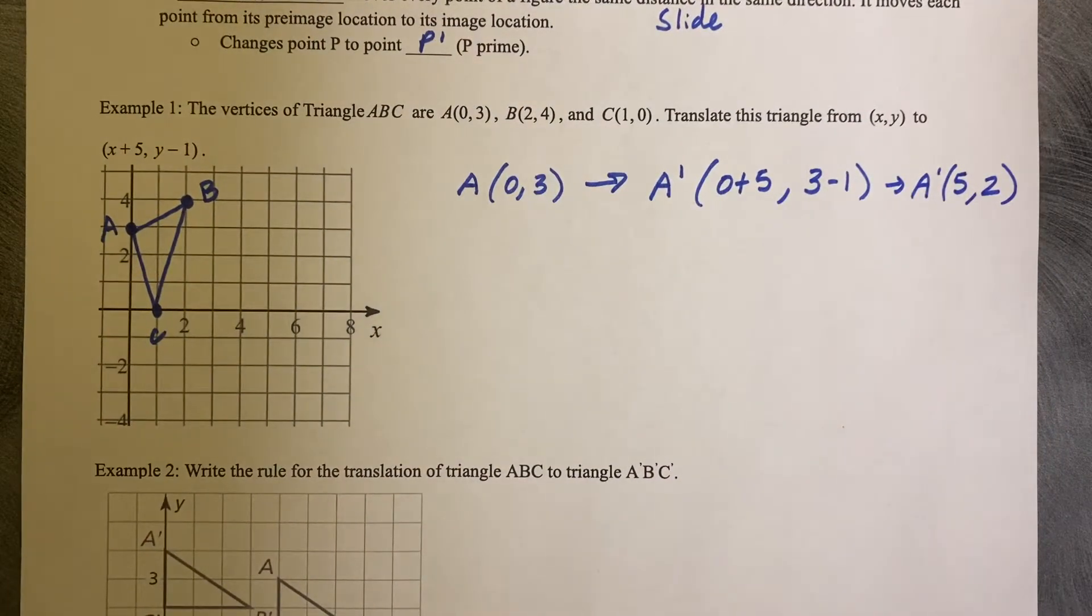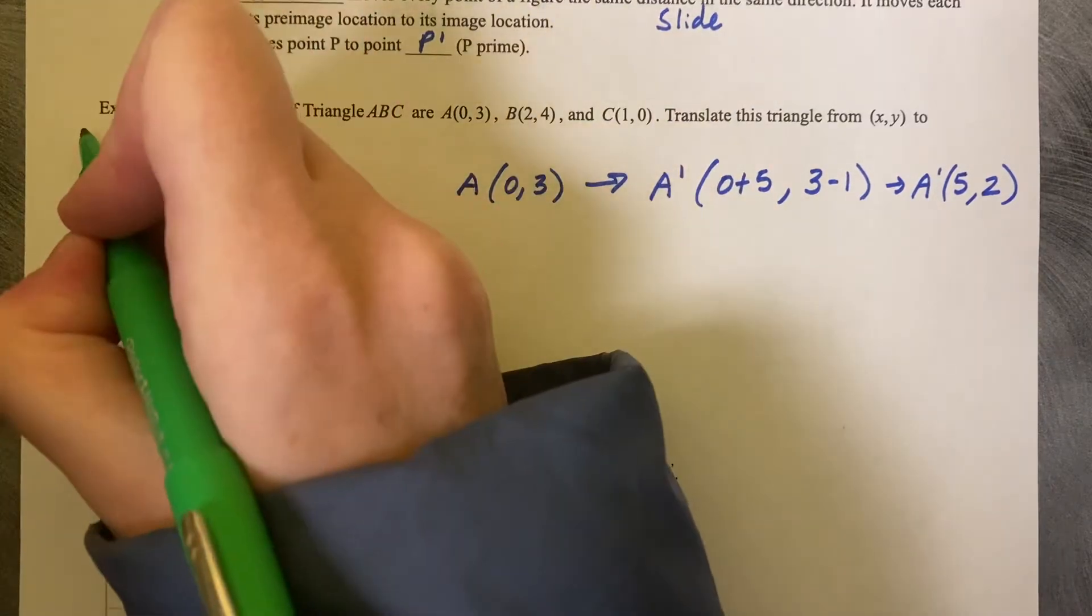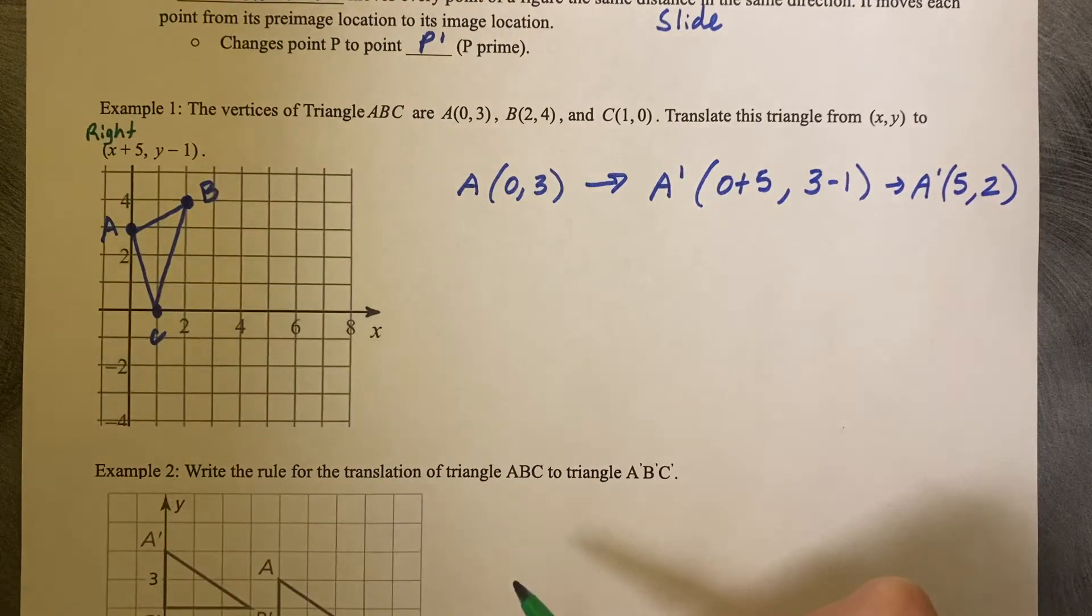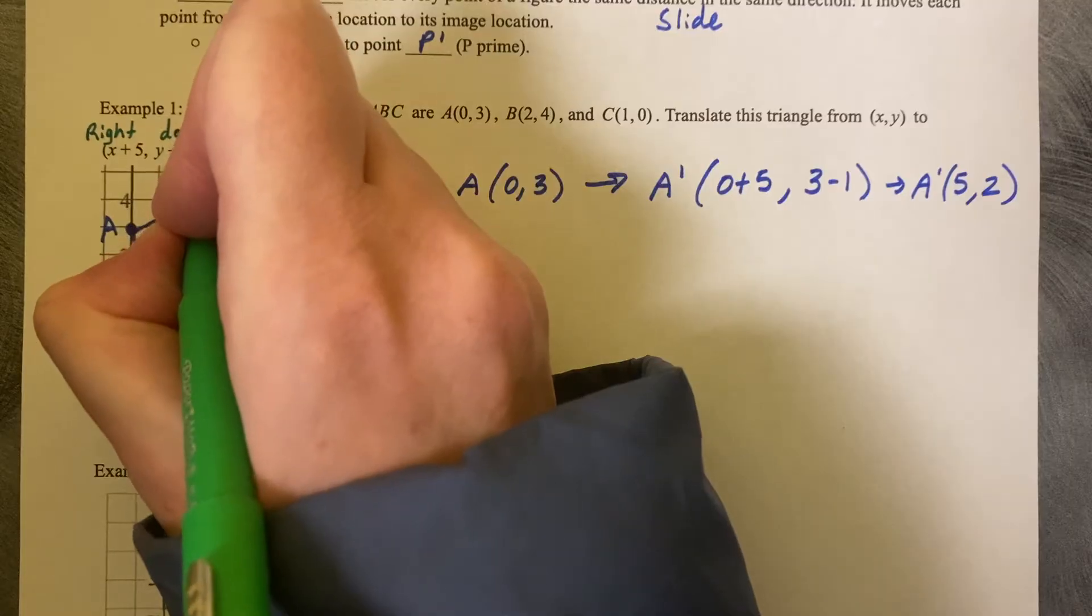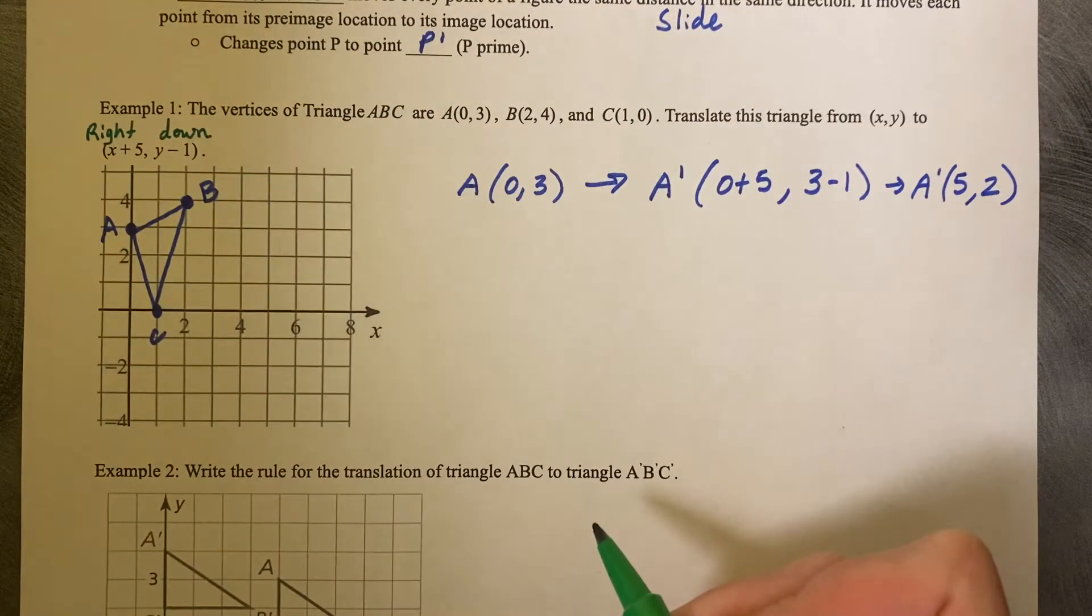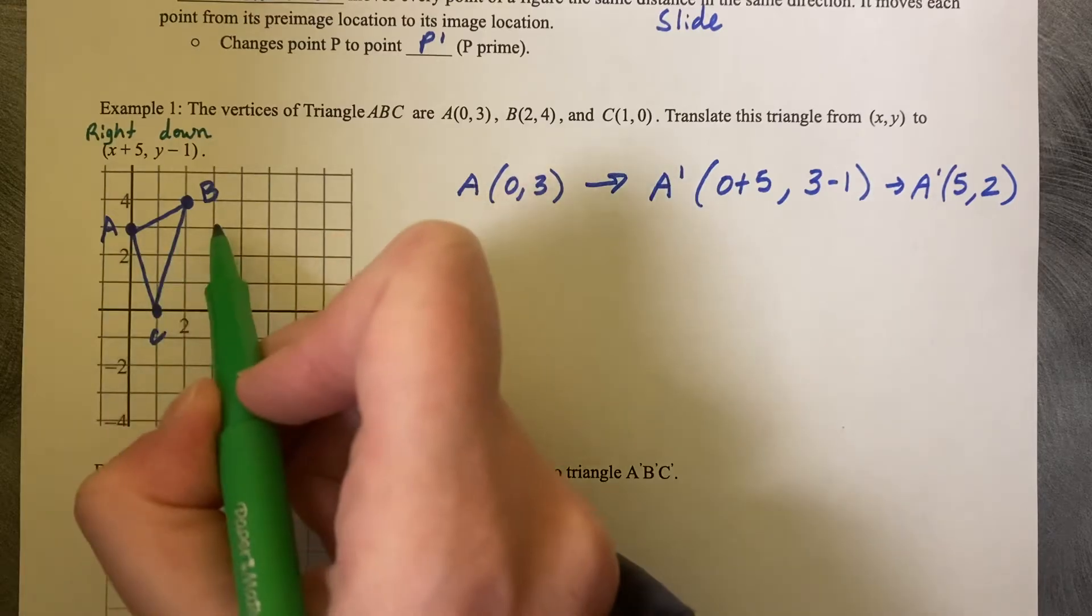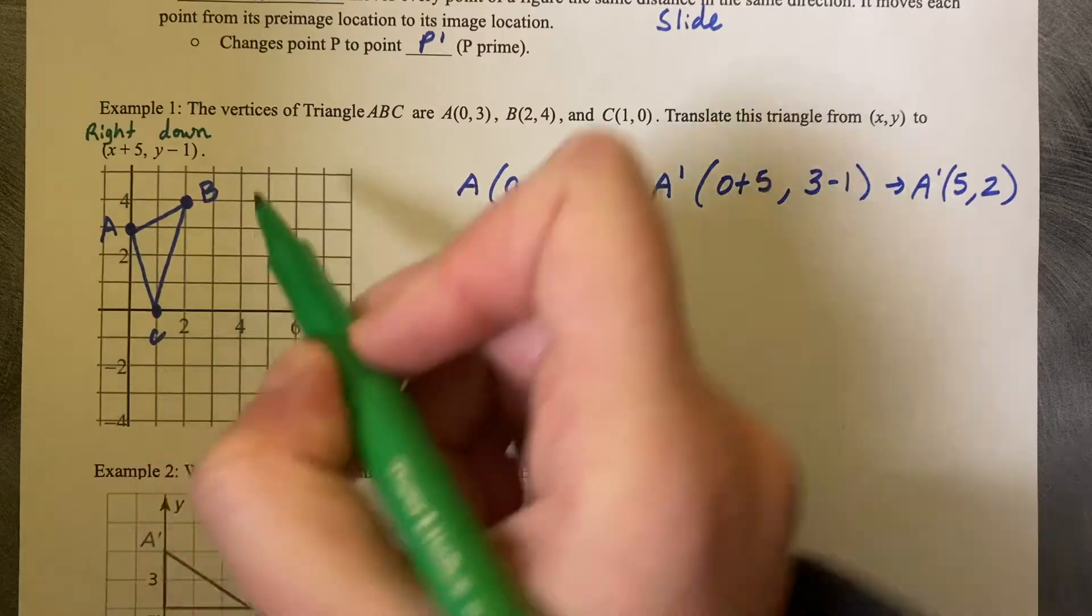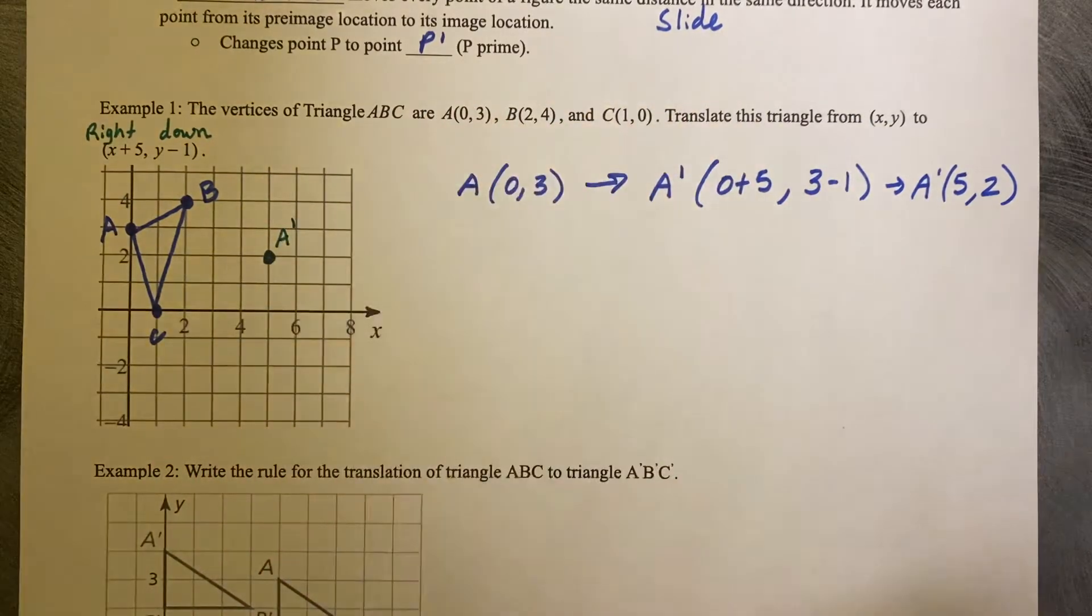We can check that over on our grid, where we're taking each point, and we're going to move it right 5 because plus X values go to the right, and Y minus 1 will go down 1. So let's check A. If we go right 5: 1, 2, 3, 4, 5, and down 1, we are at (5,2), and we call that A prime.